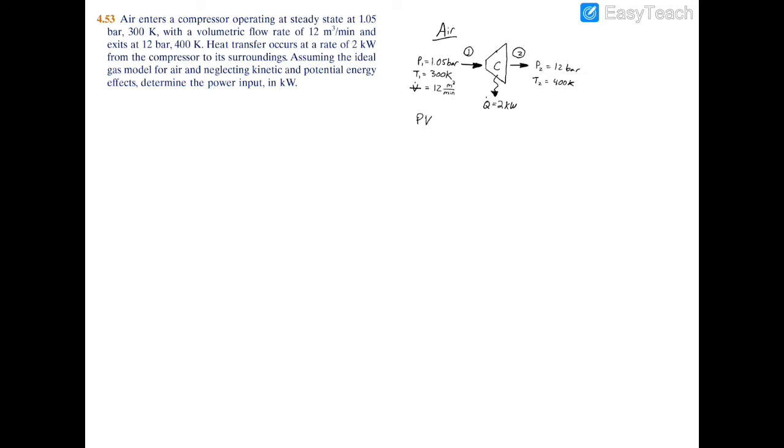So in other words, PV equals MRT, and this is on a rate basis. You have the volumetric flow rate and the mass flow rate. We need to find the input power to this compressor, W dot. We're also told that kinetic and potential energy are negligible.